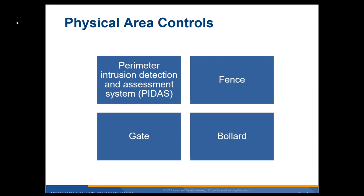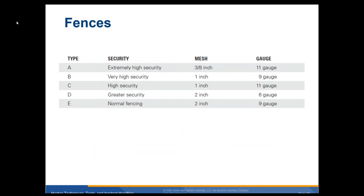With physical area controls, we have perimeter intrusion detection and assessment. That would be like intrusion detection systems and stuff like that. Fences, gates, bollards — that's not a real common word, but a bollard is like those posts around the gas pumps or in front of Target or in stores, so people can't drive a car up into it. Here are some different types of fences — type A, B, C, D, and E — extremely high security where the mesh is very small, very hard to climb, very thick so it's hard to cut. Normal fencing would be like two-inch holes, which are kind of used to climb and you see around like a baseball field.